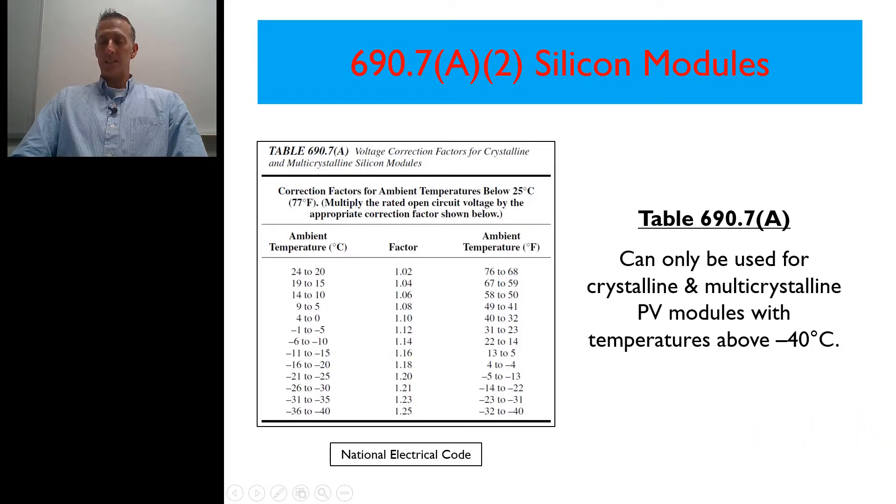What that means is whatever voltage, the open circuit voltage the modules are rated at, we would multiply that by 1.2. So if we had a 40 volt module, and we had 10 of those in series, so it's 40 times 10 is 400.